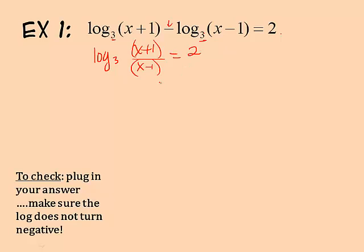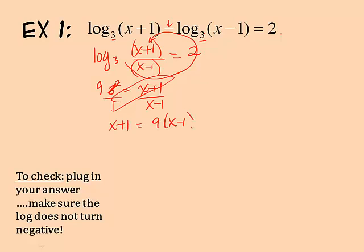Remember, the first step was to condense; the second step is to swirl. Three is my base, so three squared equals x plus one over x minus one. Three squared is nine. Now I'm going to cross multiply, so I have x plus one equals nine times x minus one.